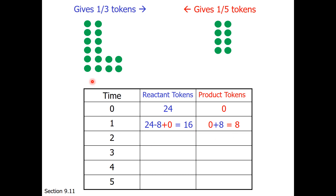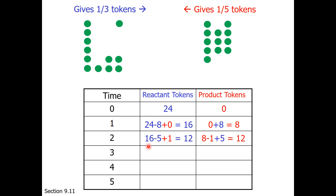Time for the second exchange. One third of 16 is 5 going forward. One fifth of 8, rounding down, is 1 going in reverse. After exchange number 2, we are now at 12 tokens on the reactant side and 12 tokens on the product side.